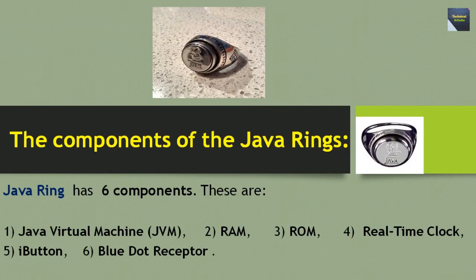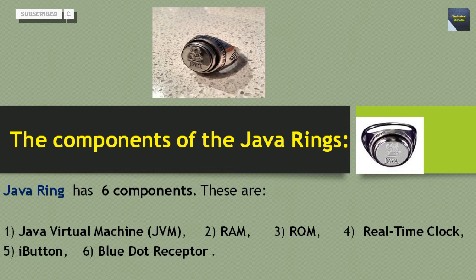The components of the Java Ring — there are 6 components: number 1 is Java Virtual Machine, number 2 RAM, number 3 ROM, number 4 real-time clock, number 5 iButton, and number 6 blue dot receptor.